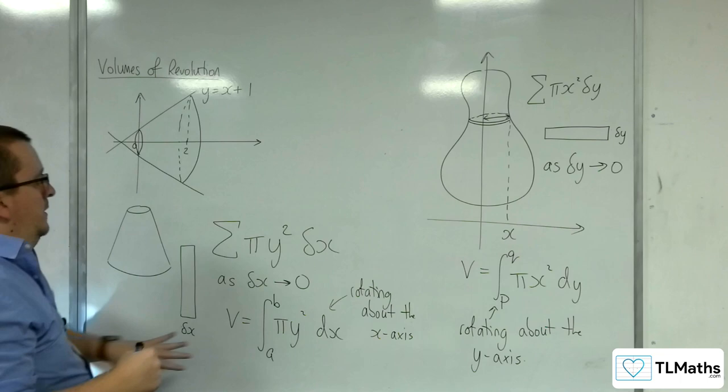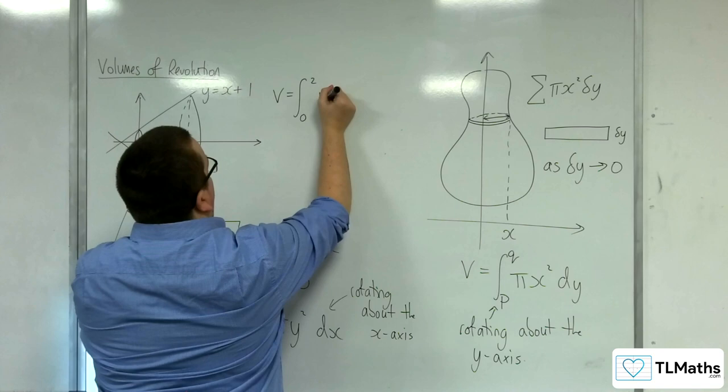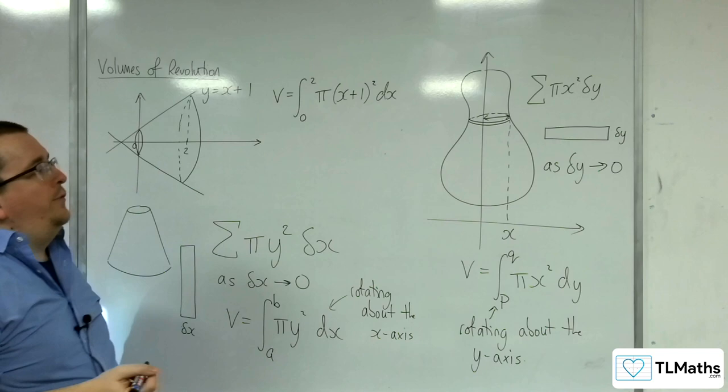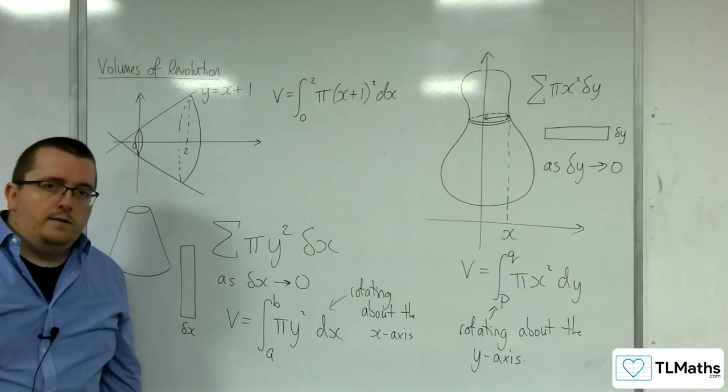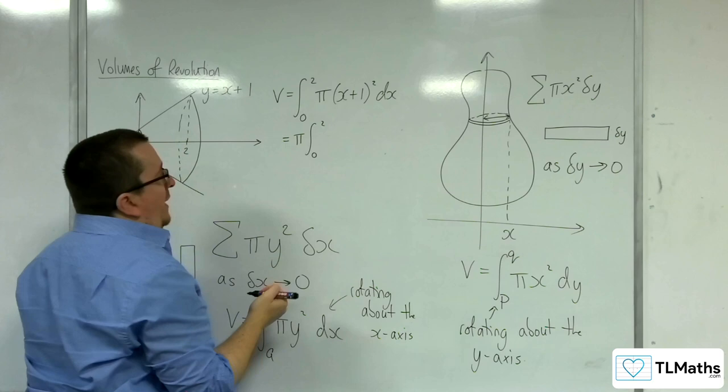And the way that I could work out the volume is by finding the integral between 0 and 2 of pi times y squared, which is x plus 1 squared, dx. Now, you can integrate this using a reversing chain rule, if you like. Or you could expand it out and integrate it that way. Just to allow first years to view this as well, that's what I'll do. I can bring the pi outside of the integral and I'll expand this out rather than using second year integration techniques. x squared plus 2x plus 1.